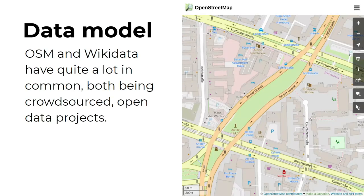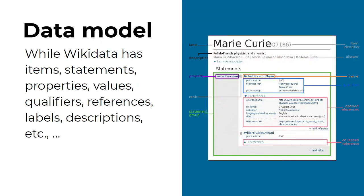The usual way we introduce OpenStreetMap to people is that OpenStreetMap is like Wikipedia for maps. But actually a more accurate way to introduce OpenStreetMap is that it is like Wikidata for geographical data — though that presupposes that the audience is already familiar with what Wikidata is. And why do we say that OpenStreetMap is like Wikidata? That's because both have quite a lot of things in common, both being crowdsourced and open data projects.